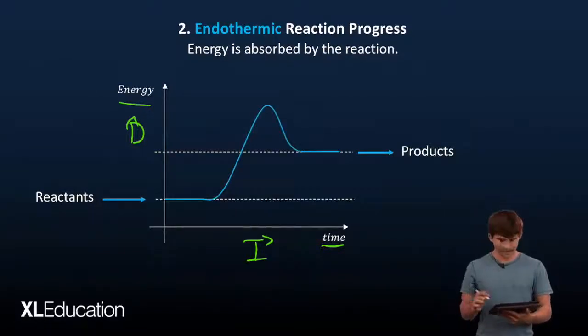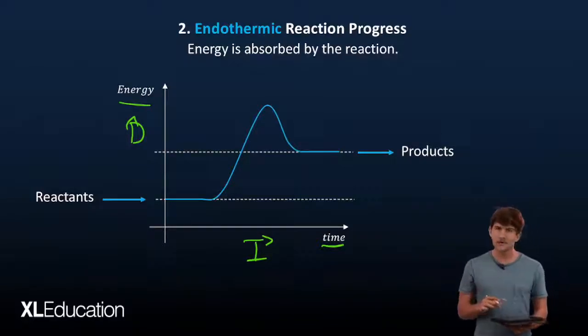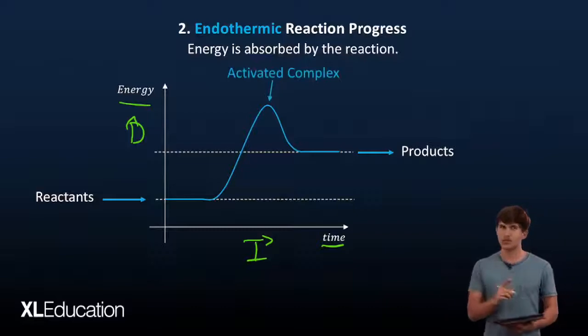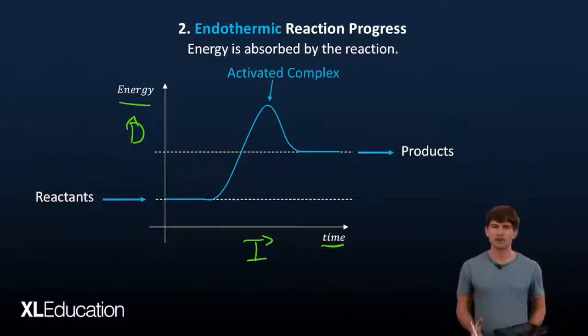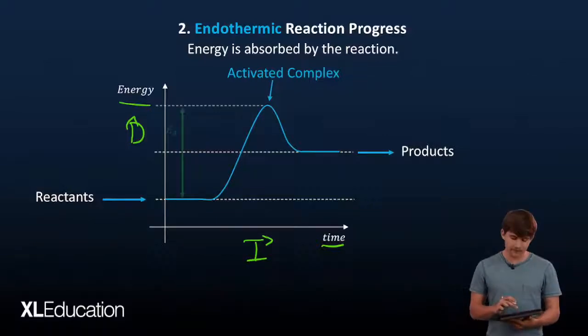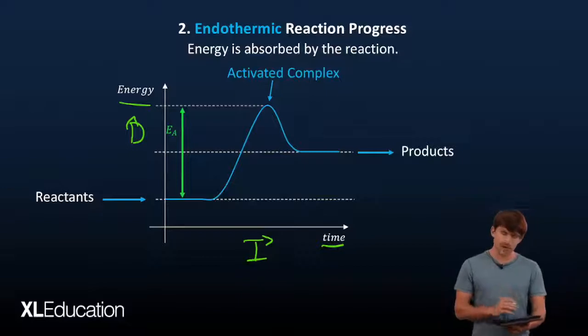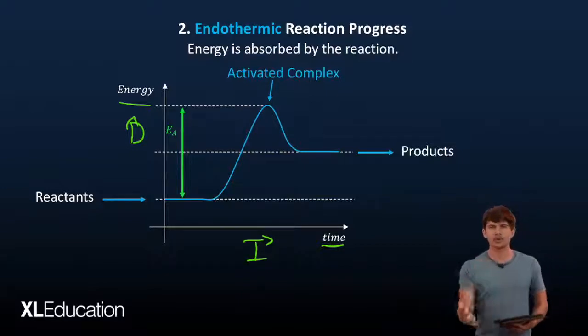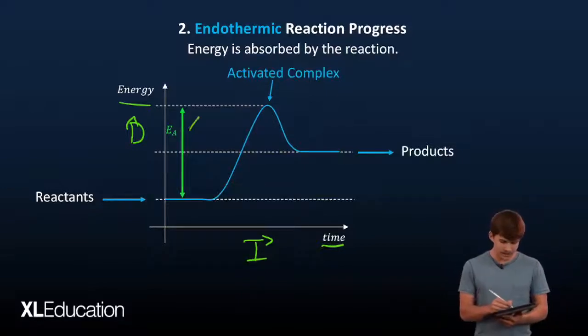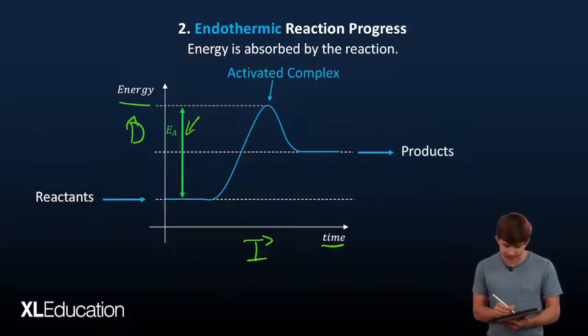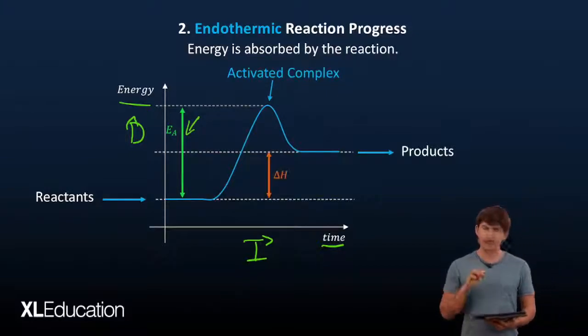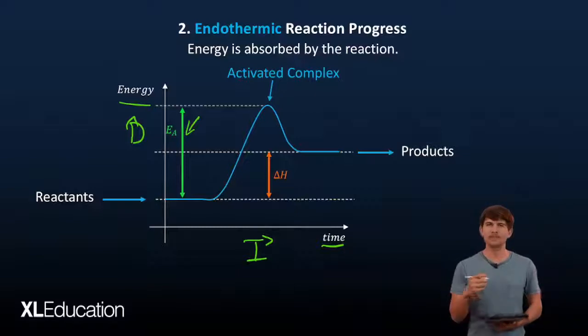What characteristics do we care about? We care about the activated complex - the point at which all of the bonds in the system have broken and they're preparing to become products. And this activation energy is what we care about because this is how much energy it took to break those bonds of the reactants and produce the products. We denote it here - it's the difference between reactant energy and activated energy. And then we care about the enthalpy, the difference in energy from the reactants to the products.